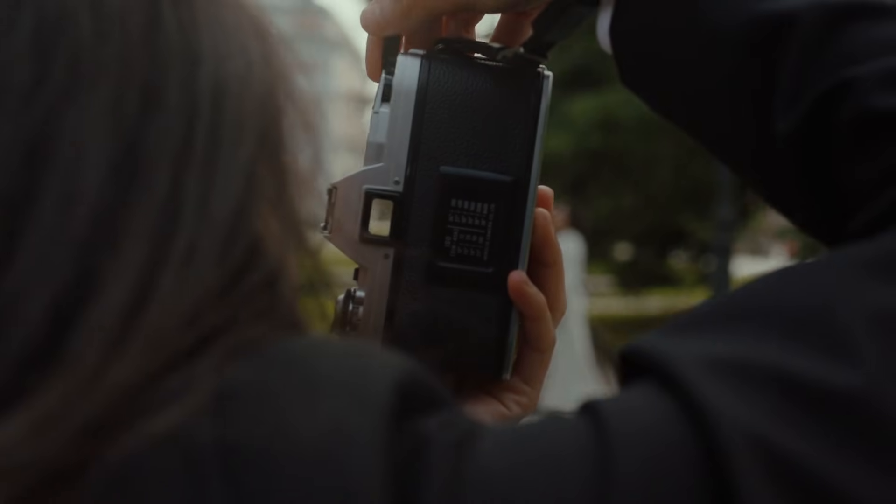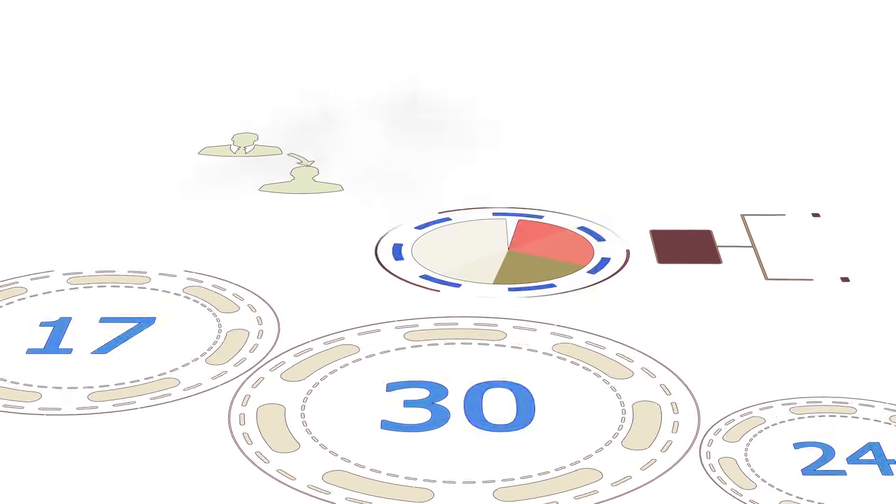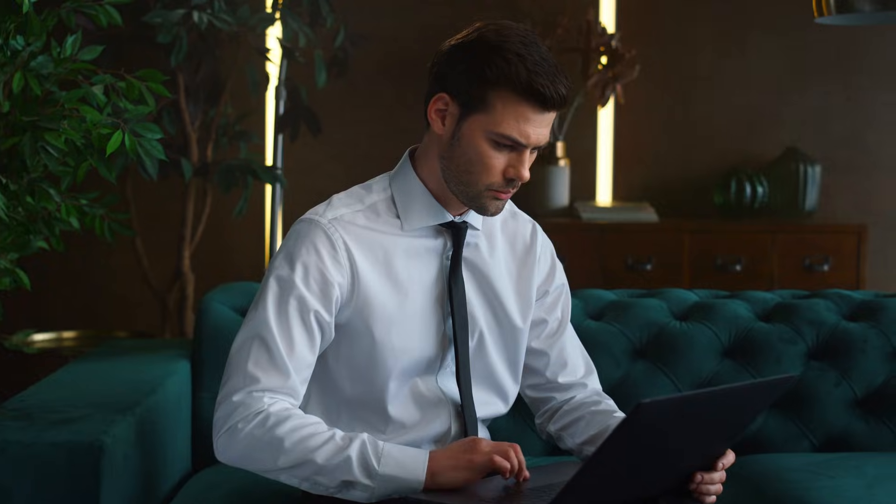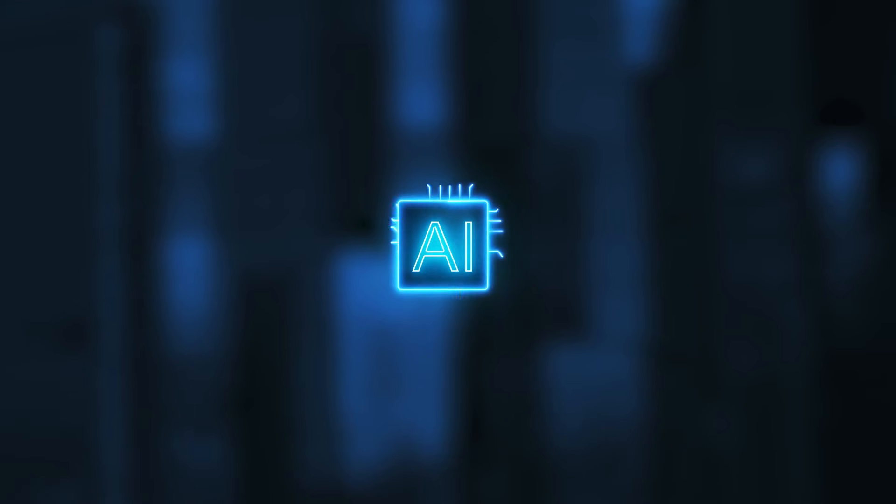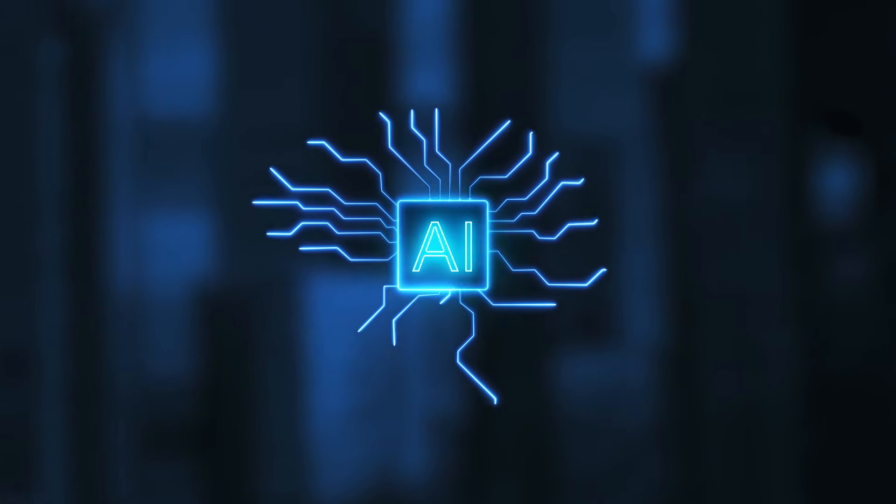But wait until you see what else it can do. Imagine taking a single photo and transforming it into a detailed multi-panel storyboard, or creating infographics that pull in real-world data from Google Search to ensure every fact is accurate. That's the power of connecting AI to live information. This isn't just about making pretty pictures — it's about creating visuals that are actually useful, factually correct, and ready for professional use.